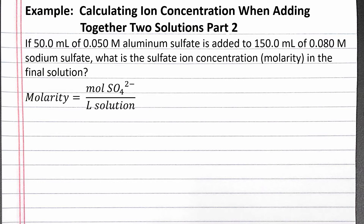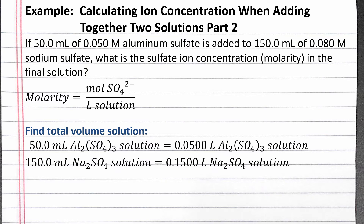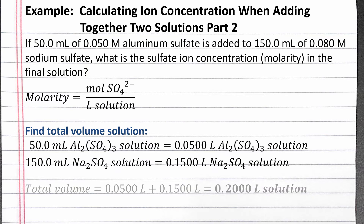First, we can find the total volume of solution. We'll convert the aluminum sulfate solution volume from milliliters to liters, and do the same with the sodium sulfate solution volume. Assuming the solution volumes are additive, our total solution volume is 0.2 liters.